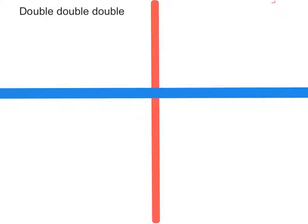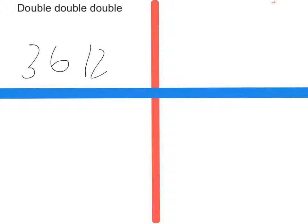Right now I'm going to do the double double double strategy. First, I'm going to do eight times three. So I'm going to use three—doubled is six, doubled again is twelve, and doubled one more time is twenty-four.